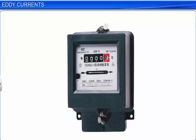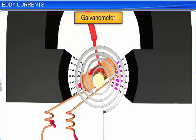The shiny metal disc in the analog type electric power meter rotates due to eddy currents. Electric currents are induced in the disc by magnetic fields produced by the sinusoidal bearing currents in the coil.